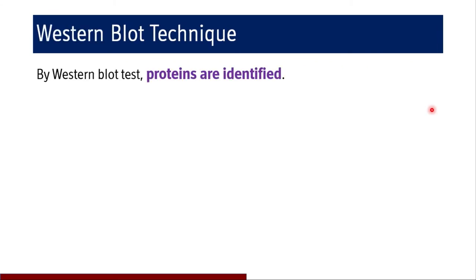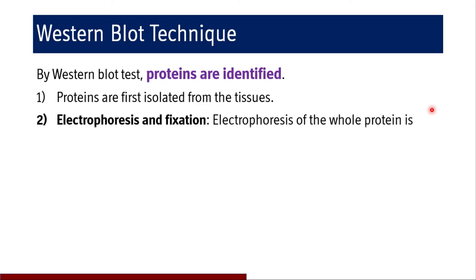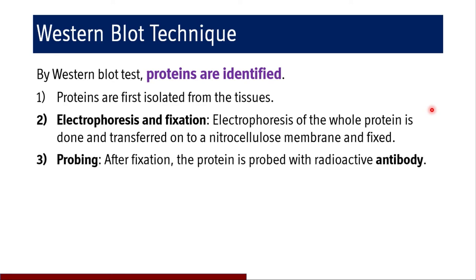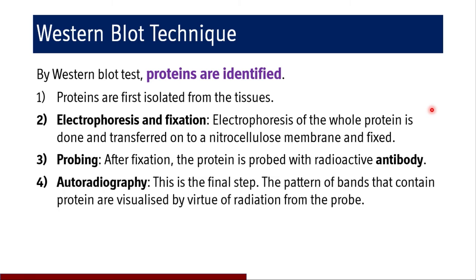Coming to western blot technique — the only difference is that proteins are identified; the rest of the process is the same. Proteins are first isolated from tissues, electrophoresis is run, and after transfer onto the nitrocellulose membrane they need to be fixed — covalently bound to the paper. Then, after fixation, the protein is probed with a radioactive antibody. Here the probe is an antibody, not mRNA or complementary DNA, because the protein as an antigen is identified by the antibody against that particular protein sequence. Mostly radioactive antibodies are used.